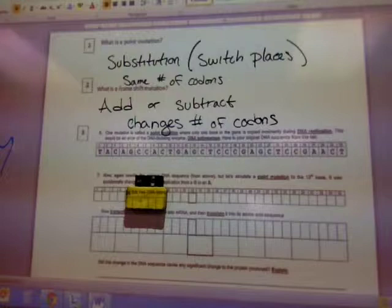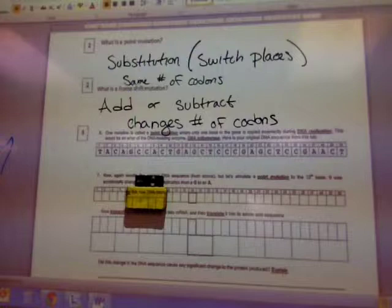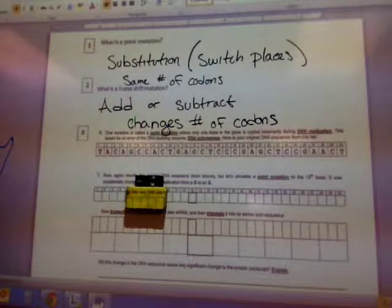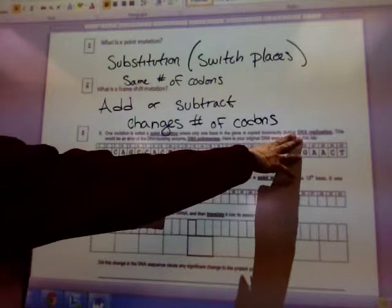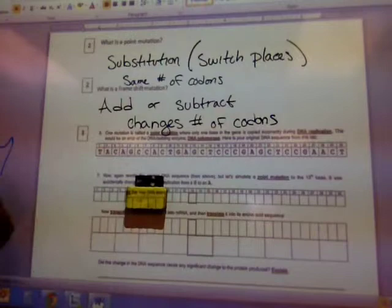The level two questions are either you knew the vocabulary words or you didn't know the vocabulary words. I really like this third question because it tells me one thing. Did you read the instructions? And as I walked around and a lot of you were asking me questions and a lot of you said, but I don't find the start. It's because you did not read the instructions. One mutation is called a point mutation where only one base in the gene is copied incorrectly during DNA replication. This would be an error in the DNA building enzyme, DNA polymerase. Here is your original sequence. So this is giving you the original sequence.